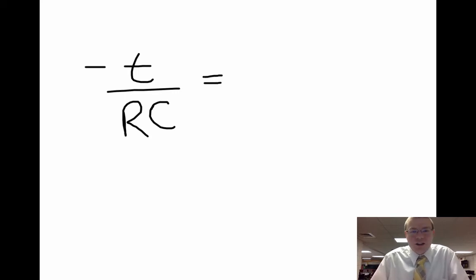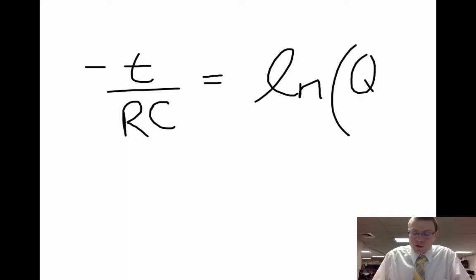On the other side, we have dQ over Q, and when we integrate dQ over Q, what we end up getting is the natural log of Q. But we have to place it between our two bounds, so it'll be the Q at any moment in time over our original Q.